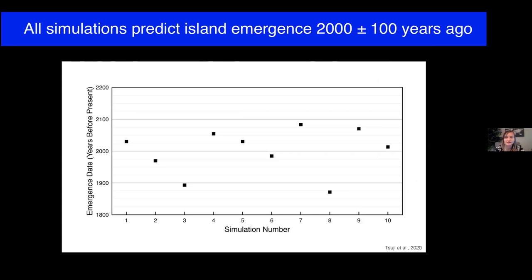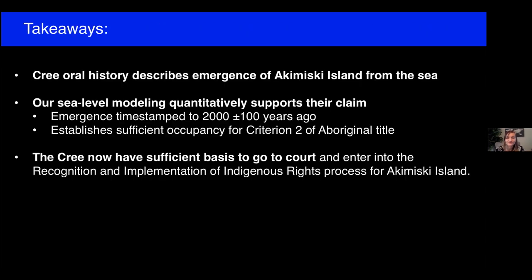We estimate that Akamiskie Island emerged from James Bay at approximately 2,030 years ago, which is certainly pre-European contact. But what about the other nine simulations? The plot shows predicted emergence date on the y-axis in years before present, and simulation number on the x-axis. There is some spread, but all simulations predict island emergence at around 2,000 years ago. So our sea level modeling quantitatively supports the Cree claim. We are able to timestamp emergence of the island to about 2,000 plus or minus 100 years ago.